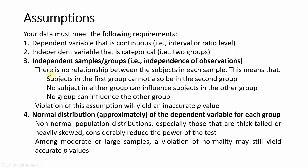Independence of observation means there is no relationship between subjects in each sample. A subject in the first group cannot be included in the other group — if a subject is in the male group, they won't appear in the female group. No subject in either group can influence subjects in the other group. Violation of this assumption will result in an inaccurate p-value.